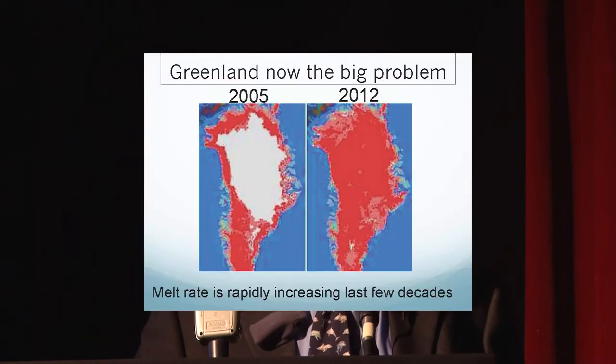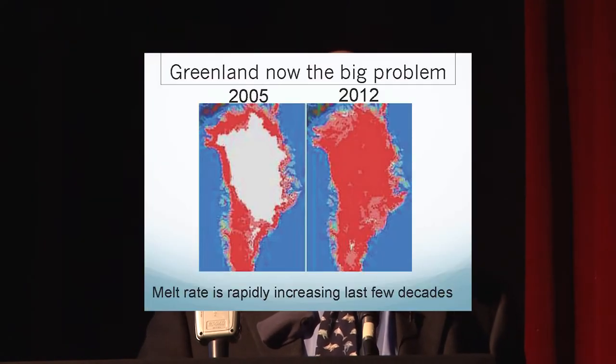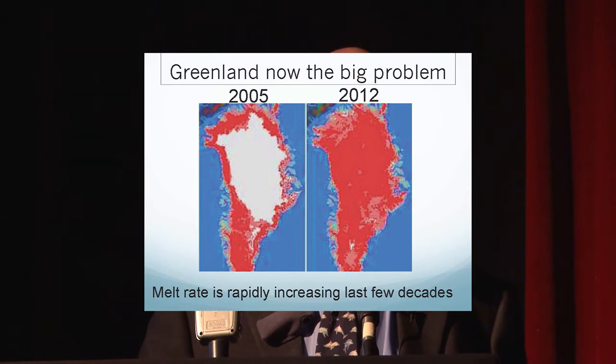To raise the level of liquid in the ocean or in a glass, you have to add ice from outside or add liquid. To see that happen, we have to go next door to Greenland, which is mostly above the Arctic Circle — a big island covered 90% in ice that year by year is melting more and more.